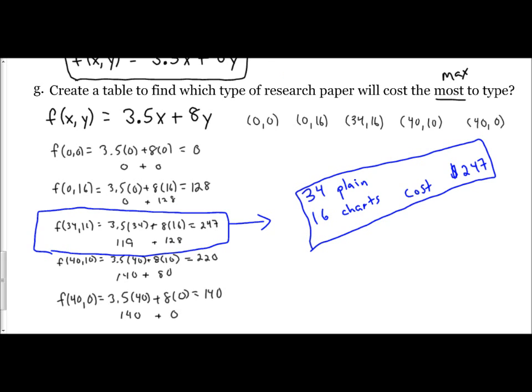So it's very similar to what we've previously done with linear programming. Just now we have to keep in context what our variables represent, X being the number of plain pages, and Y being the number of charts. And so when we figure out our max, or if we were asked to figure out our min, then you would just refer back to those units, those labels, for your final answer.